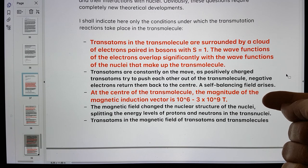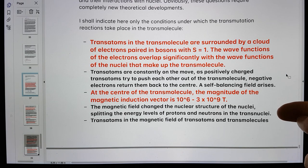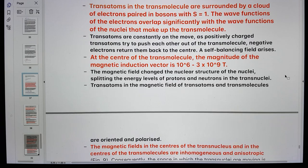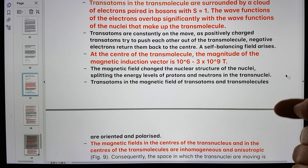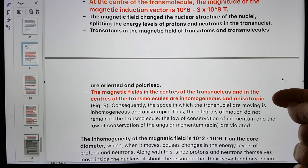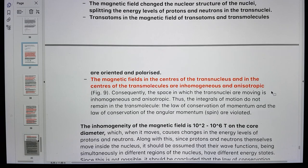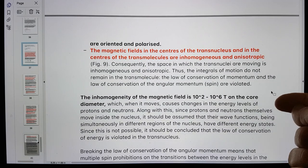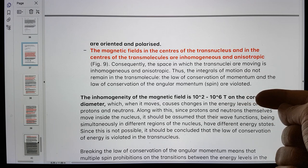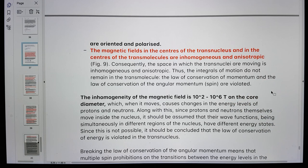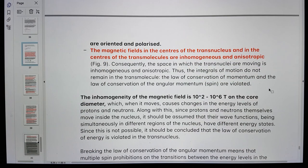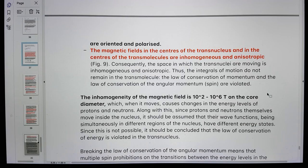At the center of the transmolecule, the magnitude of the magnetic induction vector is 10 to the power 6 to 3 times 10 to the power 9 Tesla. The magnetic field changed the nuclear structure, splitting the energy levels of protons and neutrons in the transnuclei. The magnetic fields in the center of the transnucleus and in the centers of the transmolecules are inhomogeneous and anisotropic. The inhomogeneity of magnetic field is 10 to the power 2 to 10 to the power 6 Tesla on the core diameter.